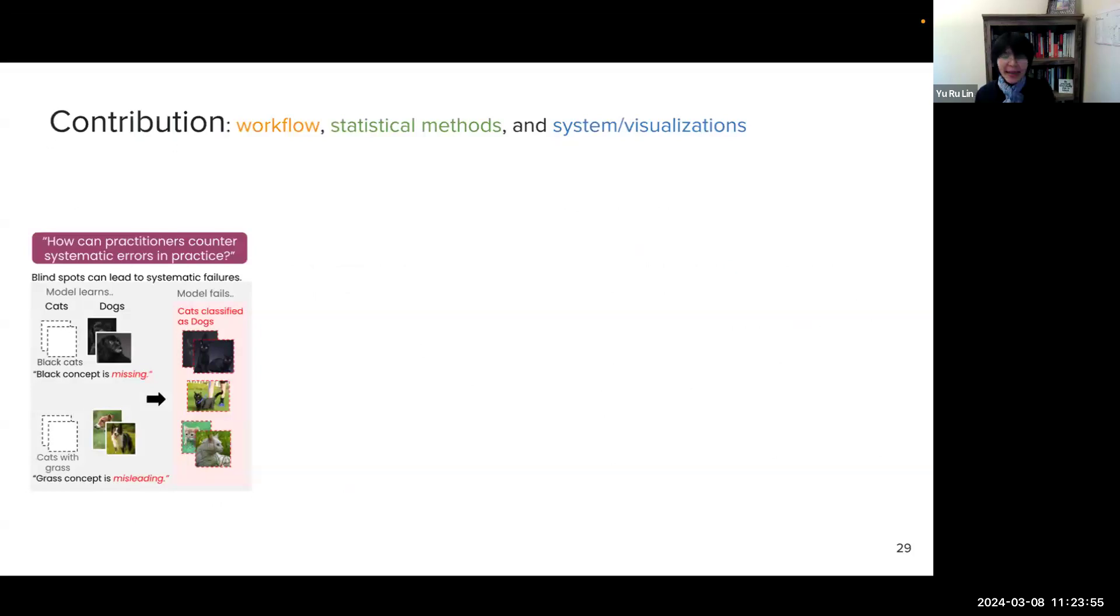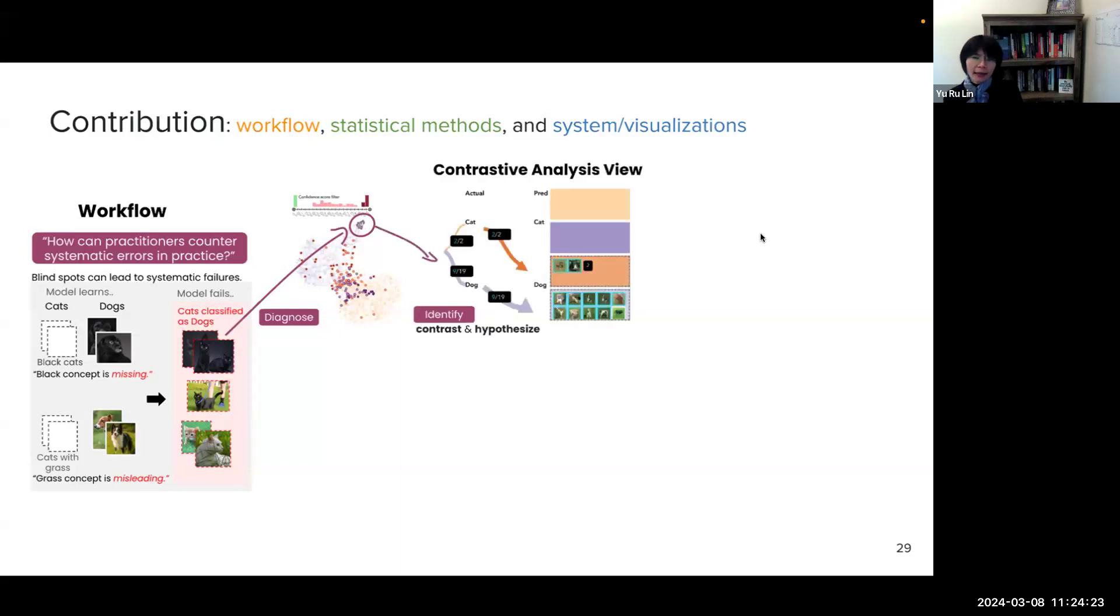So the main contribution of this work includes workflow, statistical methods, and system with interactive visualization. So this human-centric workflow has four stages. Starting from diagnosis, so users can diagnose the misclassification and locate the systematic error. And identification. Users can identify the cause of systematic errors by using the contrastive analysis view. And this allows them to visually contrast these errors between classes and make initial hypotheses about why the errors may happen.